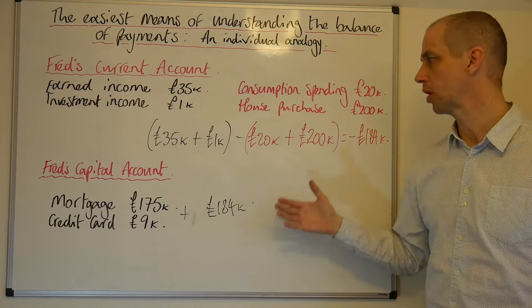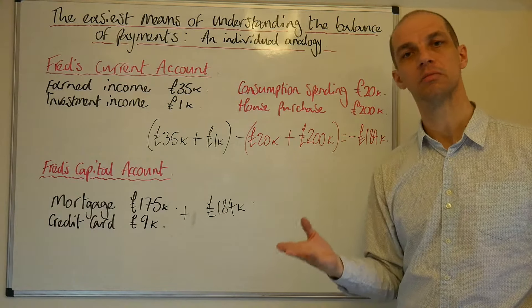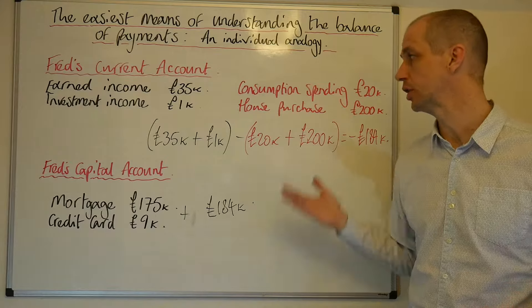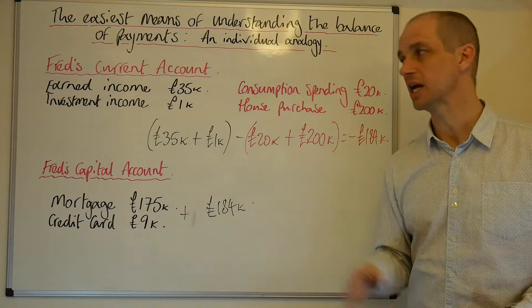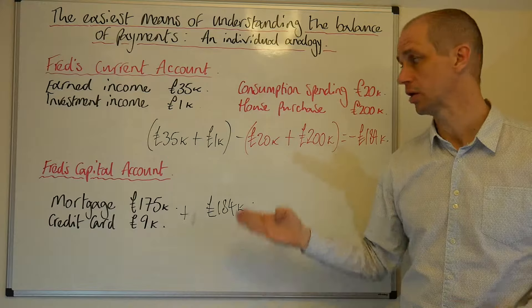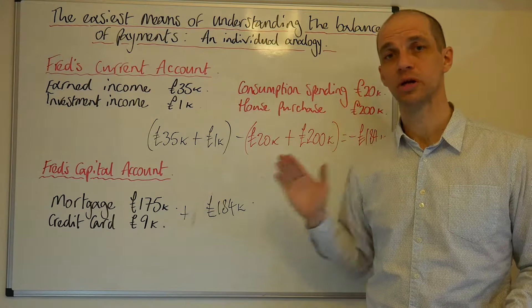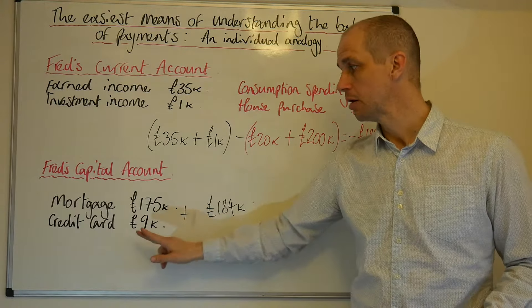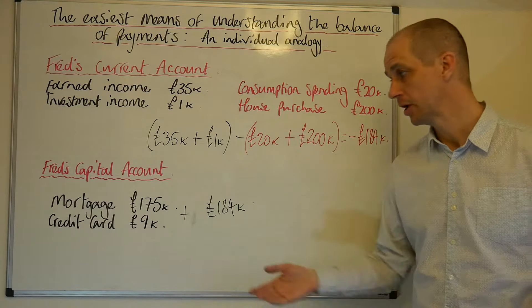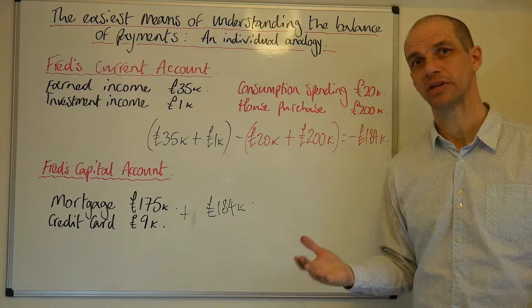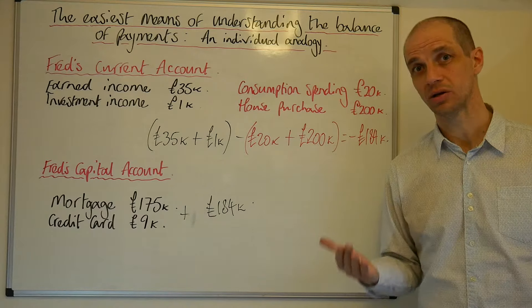The next thing to think about is how Fred is actually using this money. He's bought a house — most people would say that's a sensible thing to do, so we can't really draw any issue with that. The consumption spending is well below his earned income, so you wouldn't be too concerned about that. What you may well be concerned about, however, is not the mortgage — because interest rates on mortgages are very low — but the credit card debt. Credit card debt has interest rates of around 20% or so, and he's got £9,000 worth. At least it's not £20,000 or £30,000, which would certainly be a concern.